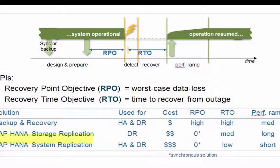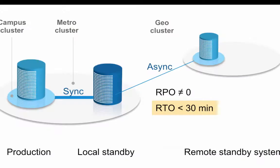Our third option is system replication. This involves having a shadow system up and running that receives any update to the production system as it occurs. Should the primary site fail, then it can take over immediately. As a result, we have a zero RPO and a low RTO — basically the time it takes to switch the IP addresses or a DNS entry from the primary to the secondary site. It is possible to set up multi-tiered system replication as well. The third system could be well outside the data center, maybe even in a different part of the world.